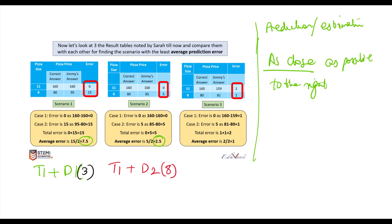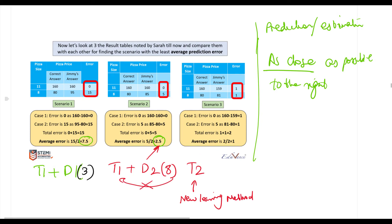In the third case we changed the teacher — we went to teacher number two, who applied a new learning method compared to teacher number one. We still used the same dataset, and this gave us a much lower error. As I said, the objective is to be as close as possible to the right answer — even if you don't get the exact answer, it's okay as long as you are as close as possible.